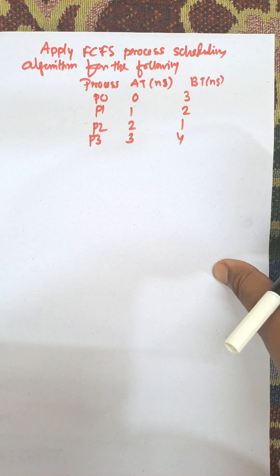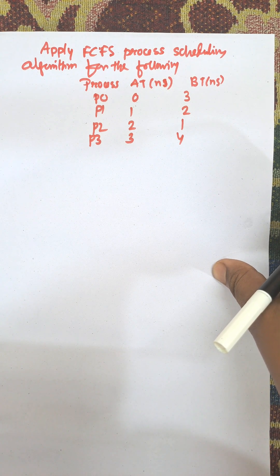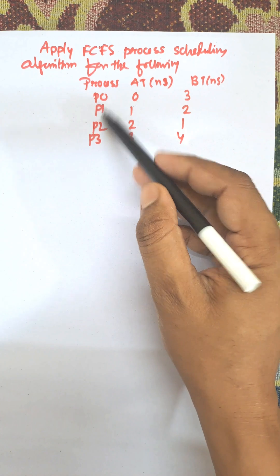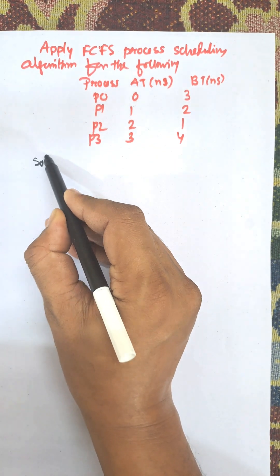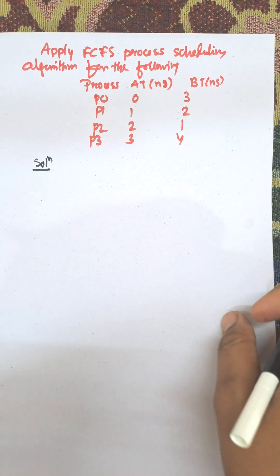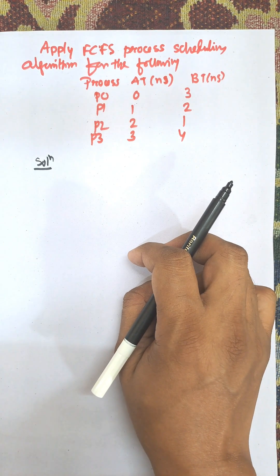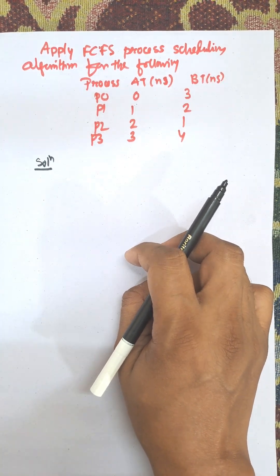In this video I'm going to discuss First-Come-First-Serve process scheduling algorithm for the following processes. There are four processes given: arrival time in nanoseconds and burst time are given. First-Come-First-Serve is a non-preemptive process scheduling algorithm. It will select the process from the ready queue according to their arrival time.